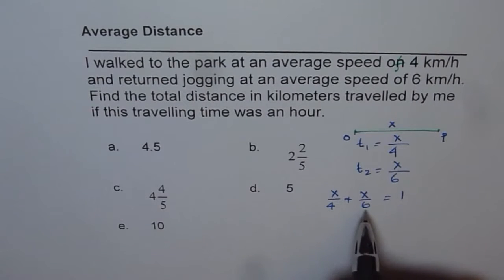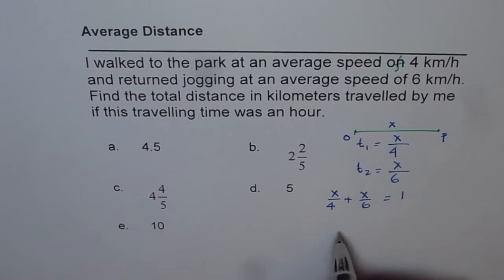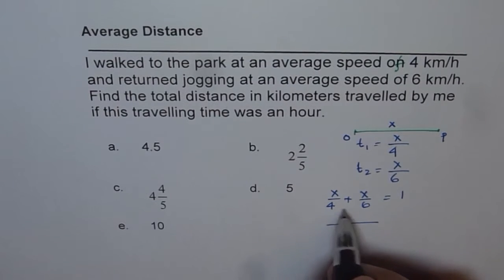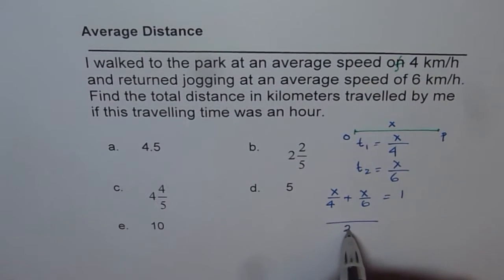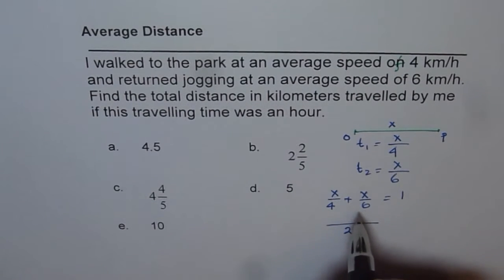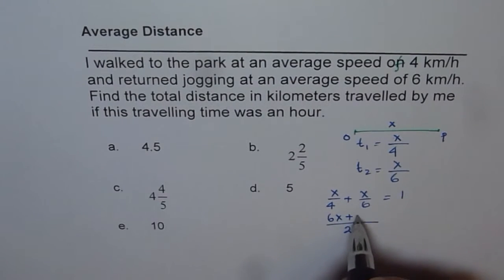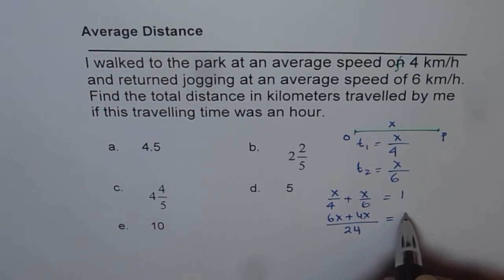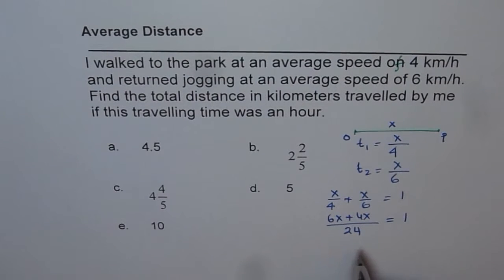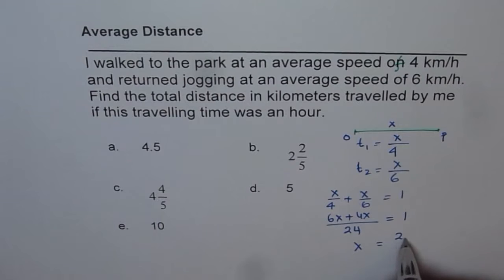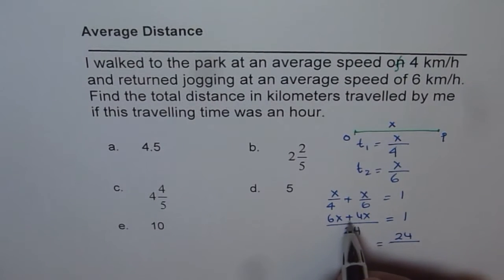So we can say x over 4 plus x over 6 is equal to 1. Now we can simplify this. Let us take the common denominator. The common denominator is 24, and we get 6x plus 4x equals 1. That is 10x, so we can say x is equal to — cross multiply — 24 over 10.